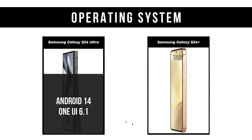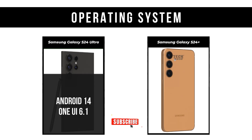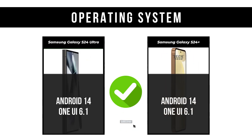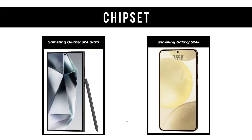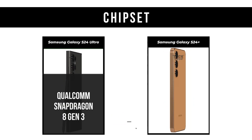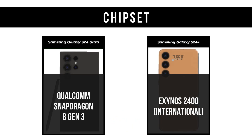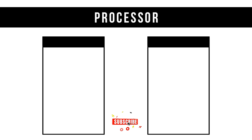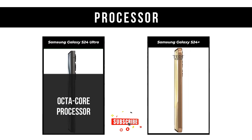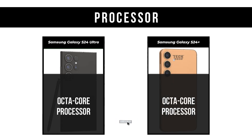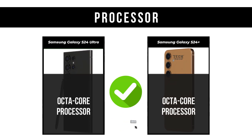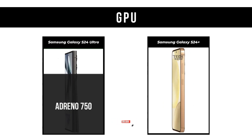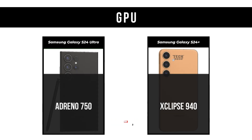Operating System: both Samsung Galaxy S24 Ultra and Samsung Galaxy S24 Plus run Android 14 with One UI 6.1. Chipset: Samsung Galaxy S24 Ultra uses Qualcomm Snapdragon 8 Gen 3, Samsung Galaxy S24 Plus uses Exynos 2400 (International). Processor: both are Octa-Core. GPU: Samsung Galaxy S24 Ultra has Adreno 750, Samsung Galaxy S24 Plus has Xclipse 940.